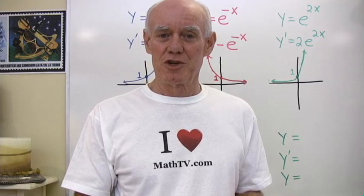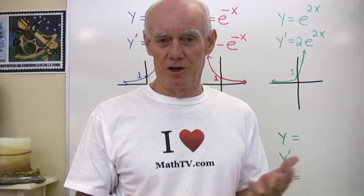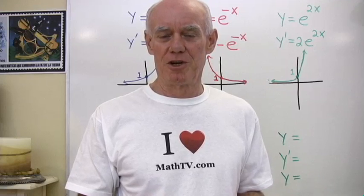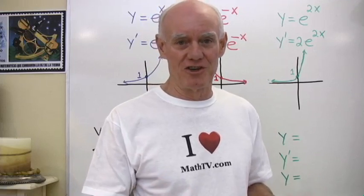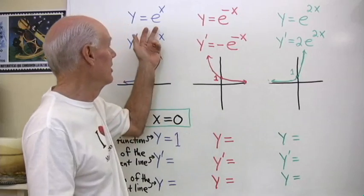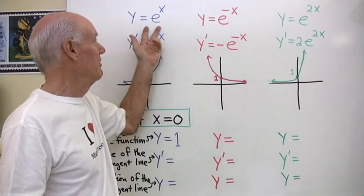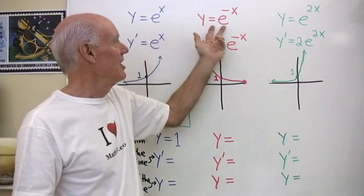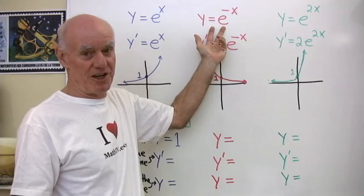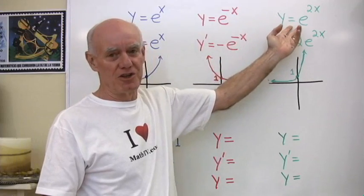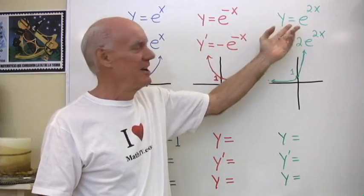I want to do a couple more problems just to give you more of an intuitive feel for these exponential functions and their derivatives. So over here I've written three functions: y equals e to the x, y equals e to the negative x, and y equals e to the 2x.